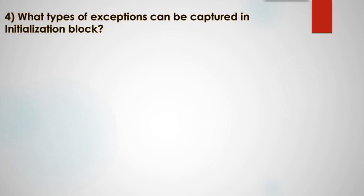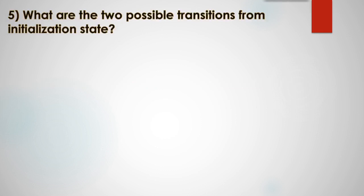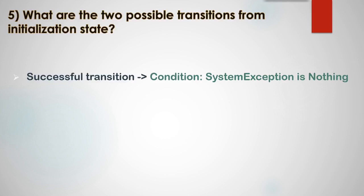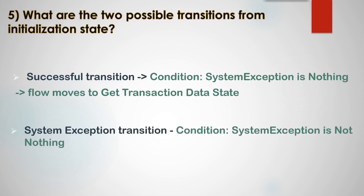What type of exceptions can be captured in the initialization block? System exceptions can be captured in the initialization block. The next question is: what are the two possible transitions from the initialization state? The first is a successful transition, which occurs when 'system exception is nothing' — the flow then moves to the Get Transaction Data state. The second is a system exception transition, which occurs when a system exception is not nothing, and the flow moves to the End Process state.